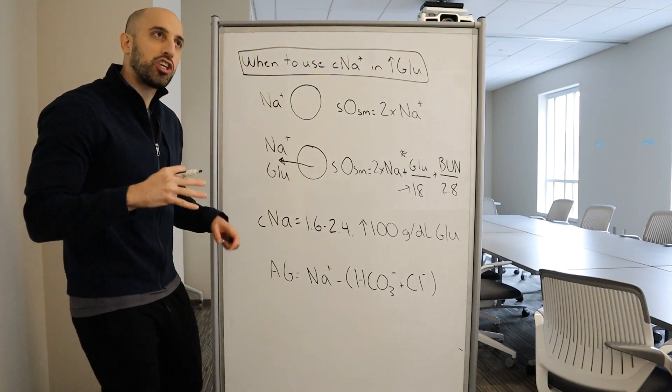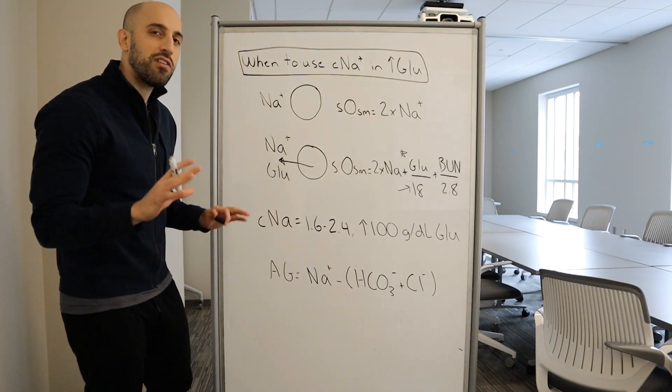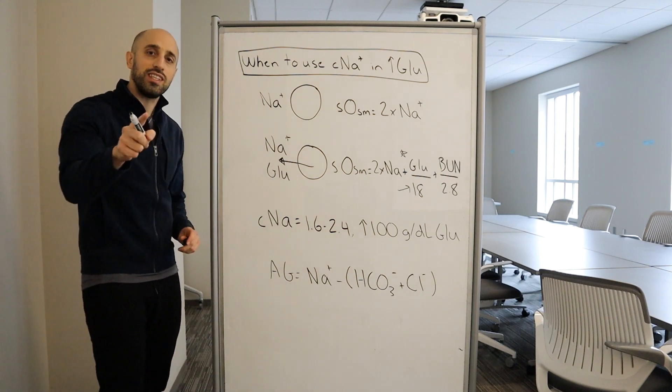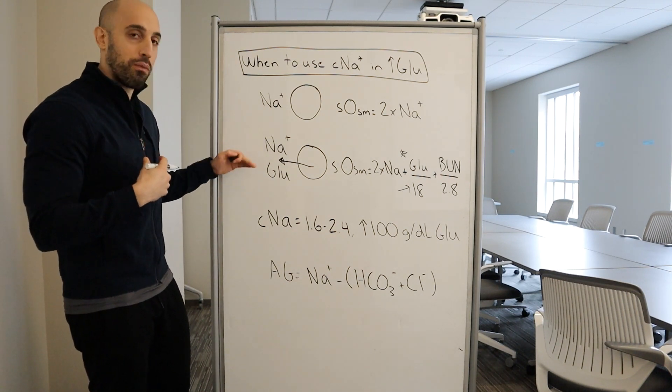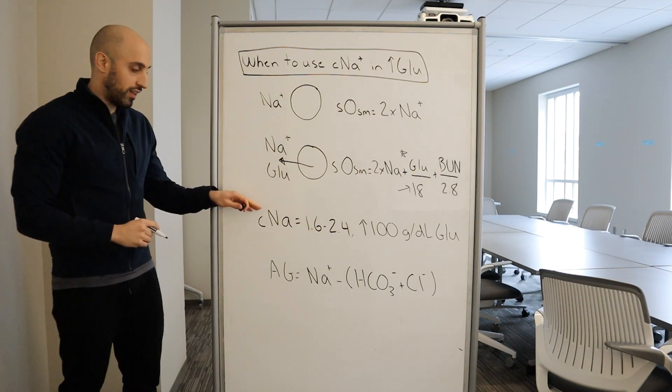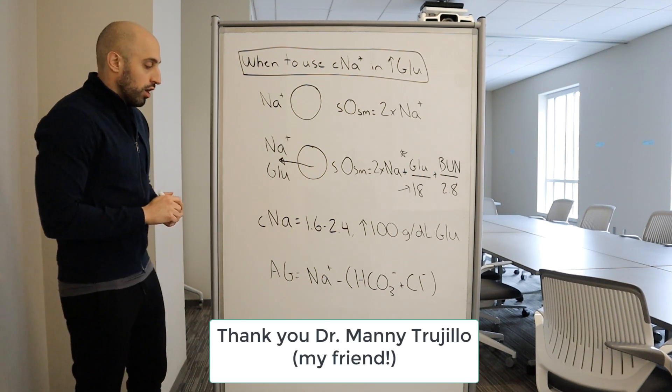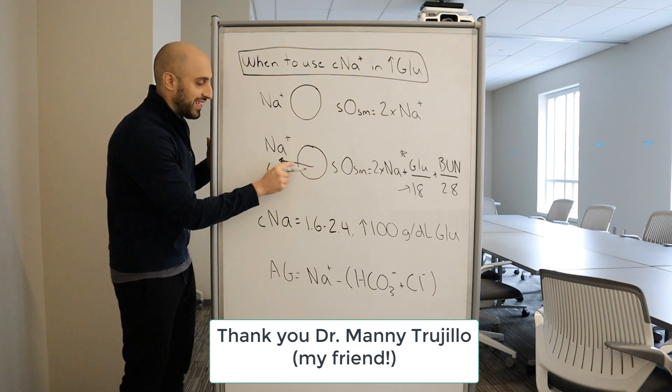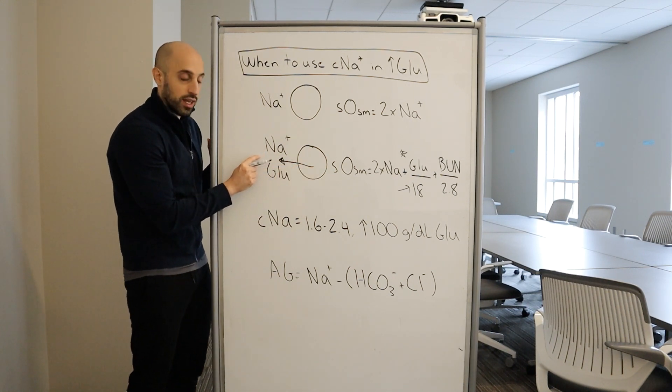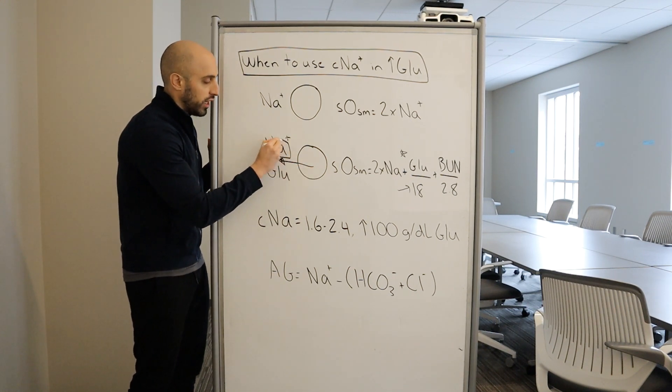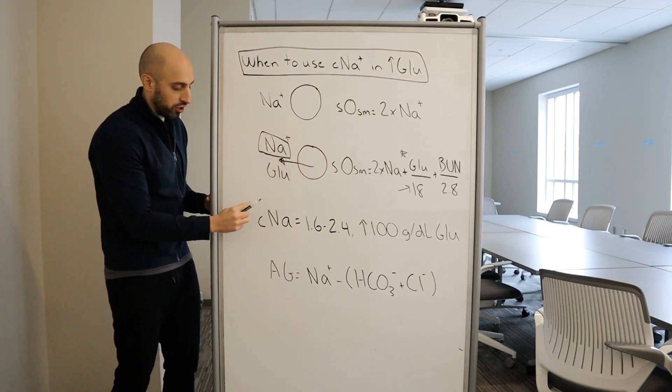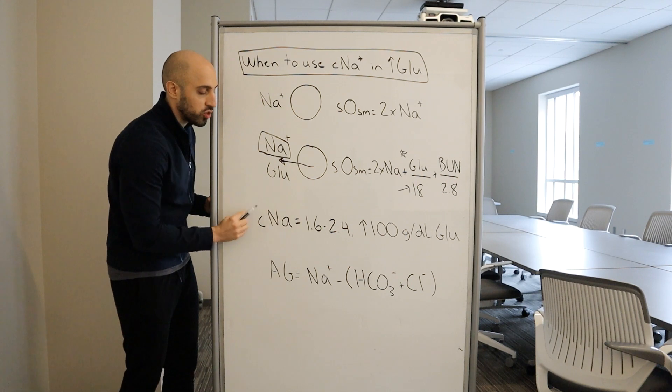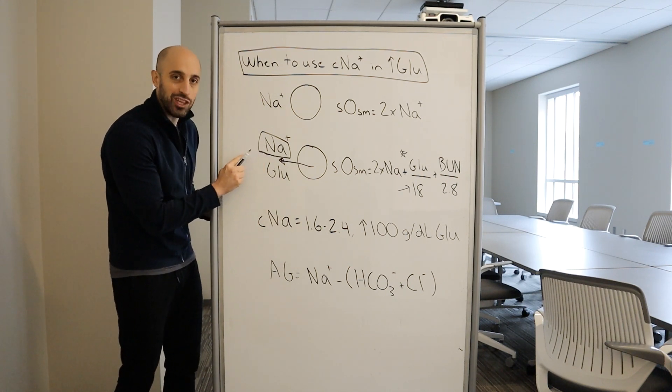Okay, very good. So what do we mean when we say corrected sodium? This is a very confusing topic. And John Lince, thank you so much for raising this question because I learned in the process of creating this response. Basically, because water is leaving the cell and coming extracellularly and diluting the sodium, we want to correct for this dilutional factor. That's what's referred to as corrected sodium, correcting for the dilution caused by the hyperglycemia.